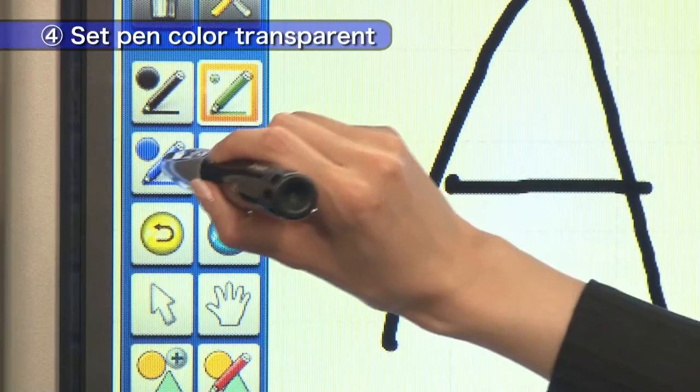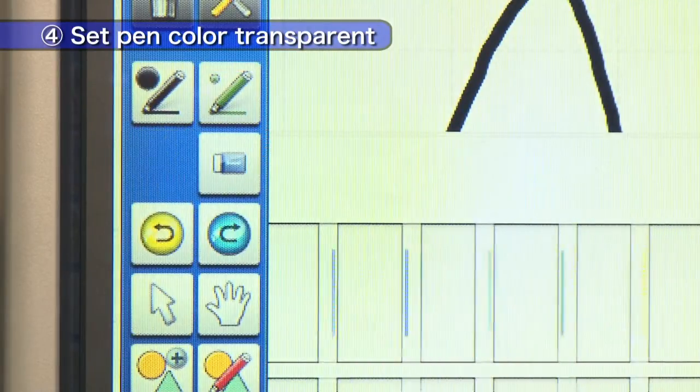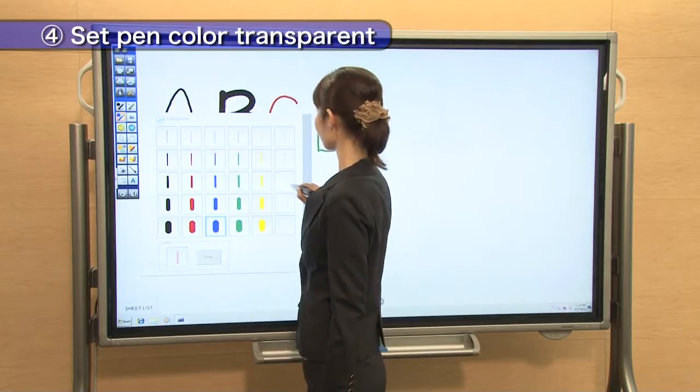Let's draw a line like a highlighter. Put a check on the transparent box.